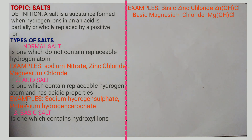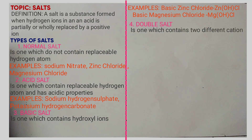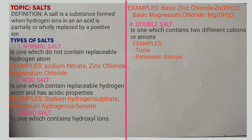The last type is double salts. A double salt is one that contains two different anions or cations. Examples include trona, potassium aluminum sulfate, or sodium aluminum fluoride.